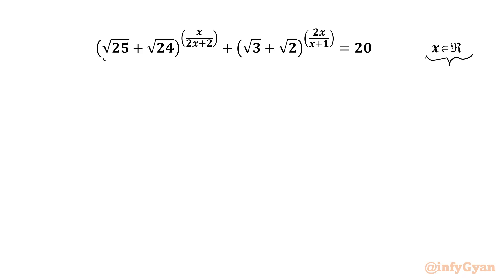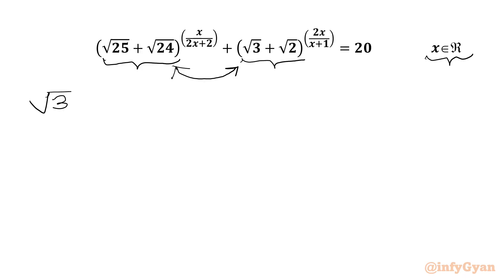We have base 1 as root 25 plus root 24, and here we have base root 3 plus root 2. Let's check whether they are convertible bases or not. So I will calculate the value of root 3 plus root 2 whole square, or we can check also square root of square root 25 plus square root 24.